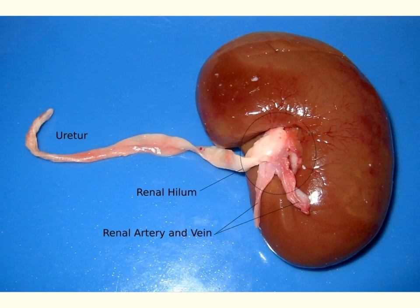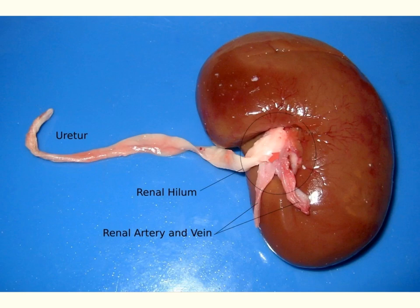Here we have the external anatomy of the kidney, and you'll see the ureter, which travels from the kidney down into the urinary bladder. We'll also have the renal arteries and veins — it will be very difficult to determine which is which since they are not injected. The renal hilum is the recessed area where the ureter and the arteries and veins come in and attach to the kidney.